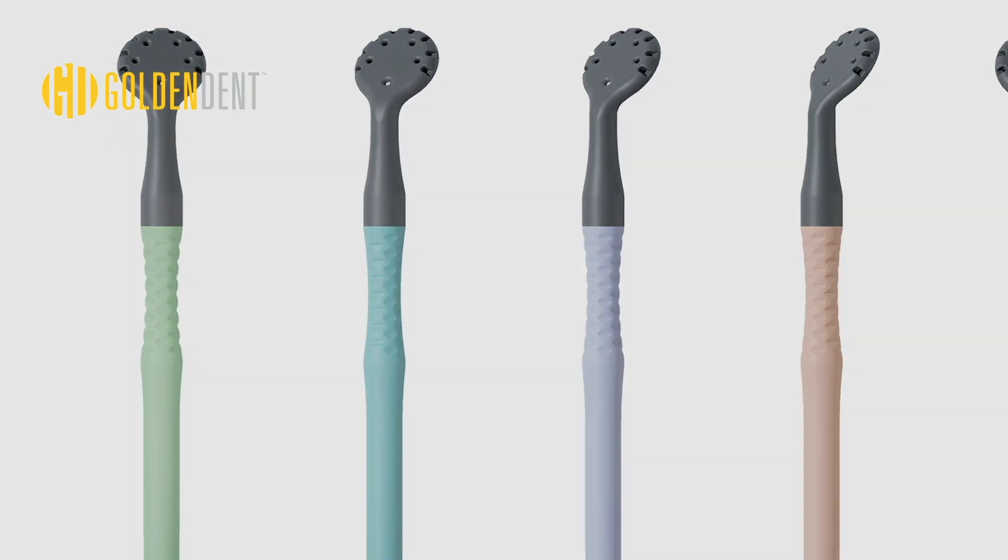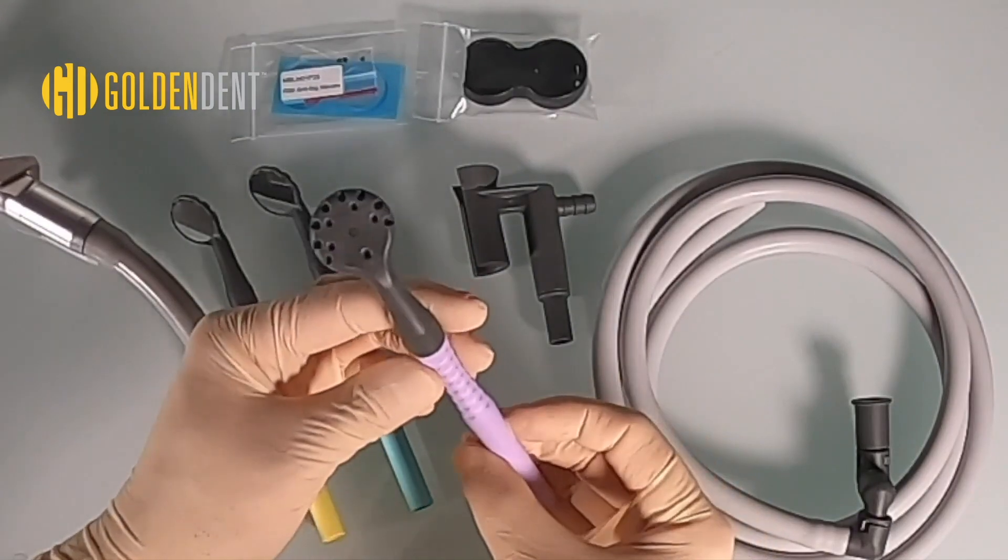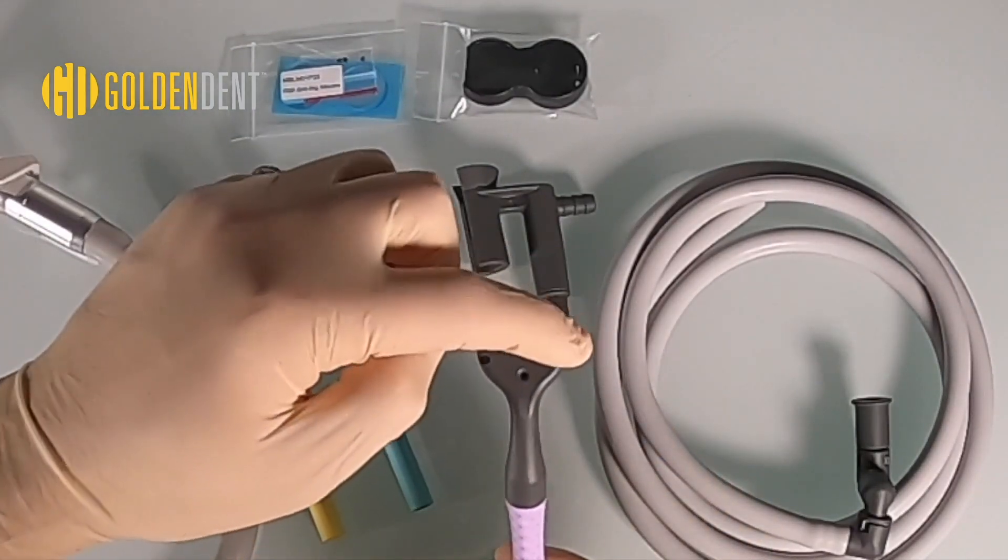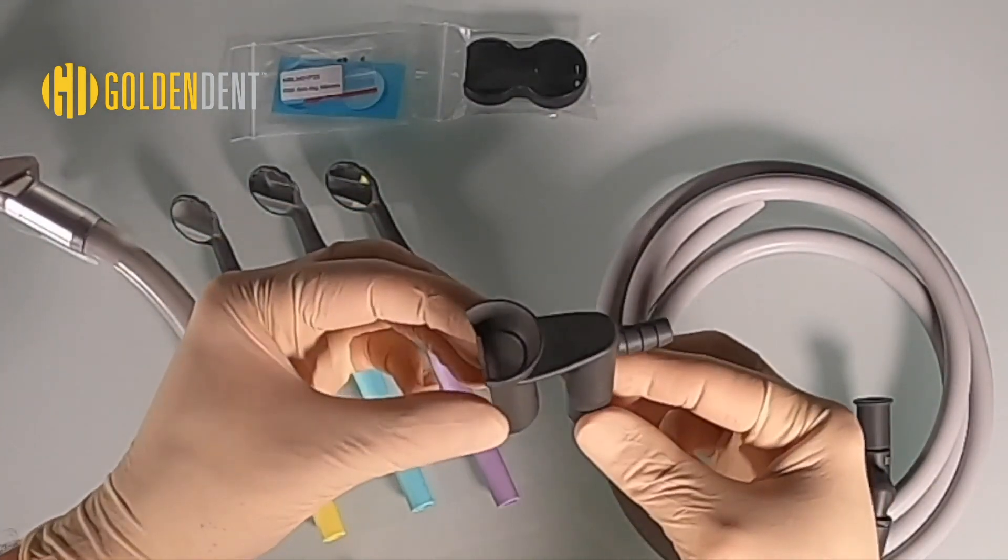This is our M7 HVE suction mirror. It comes in a variety of fun colors. The M7 mirror has 20 suction holes spread over the back and encircling the front of the lens, providing powerful and quick evacuation.